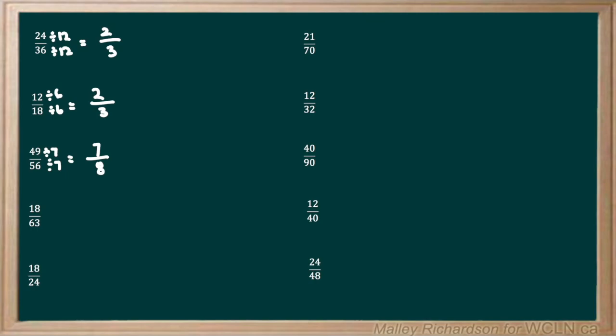Now we have 18 over 63. Again, what's the highest factor that can go into both 18 and 63? Using our common multiples, we know that that's 9, so we divide the top and bottom by 9. 18 divided by 9 gives us 2 and 63 divided by 9 gives us 7. 2 over 7 cannot be reduced down any further, so 2 sevenths is our final answer.